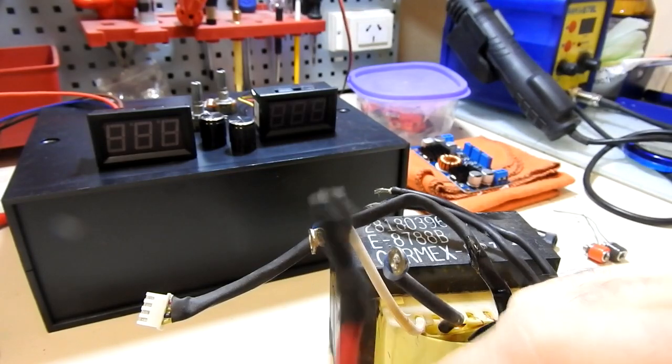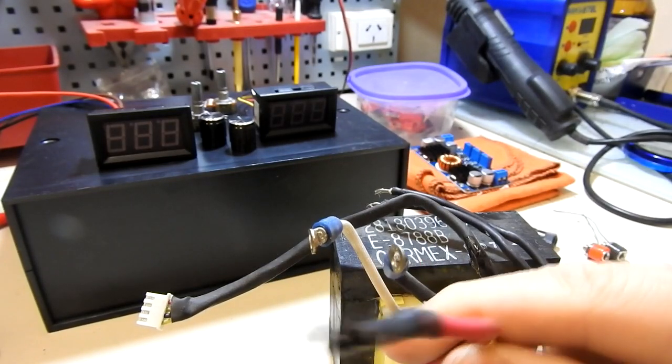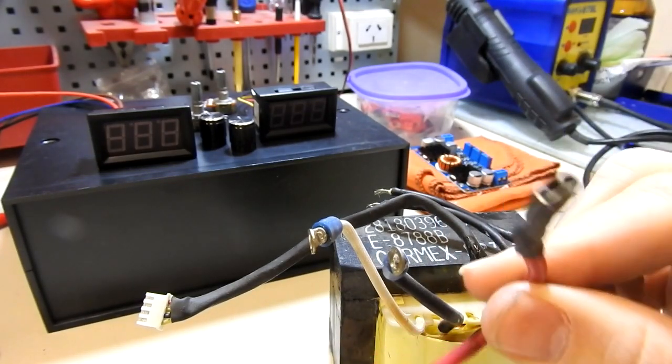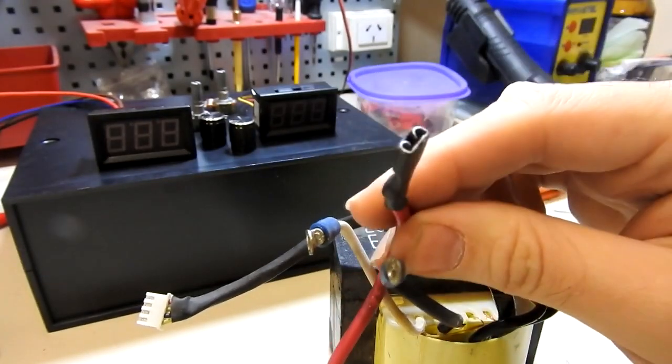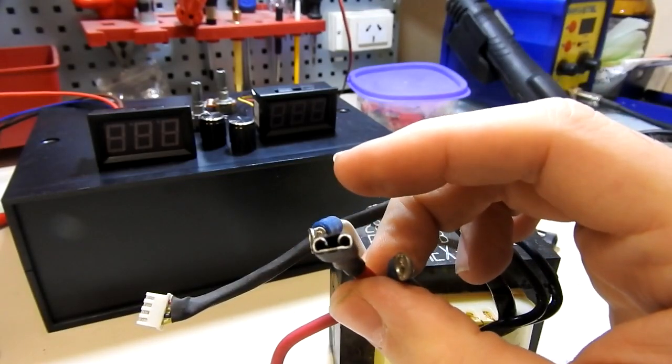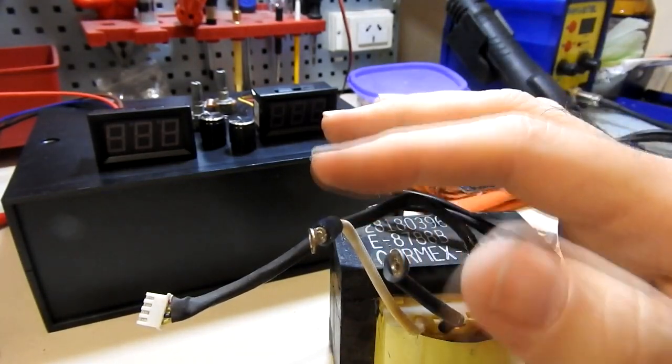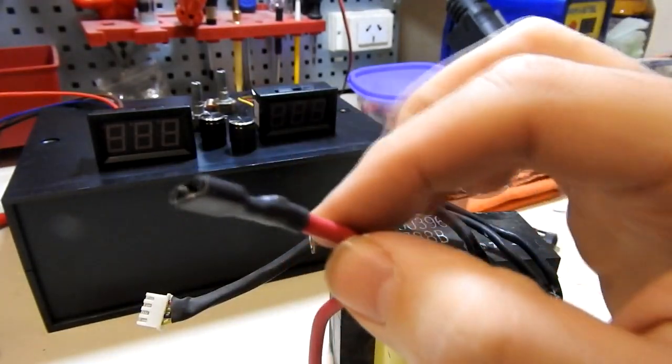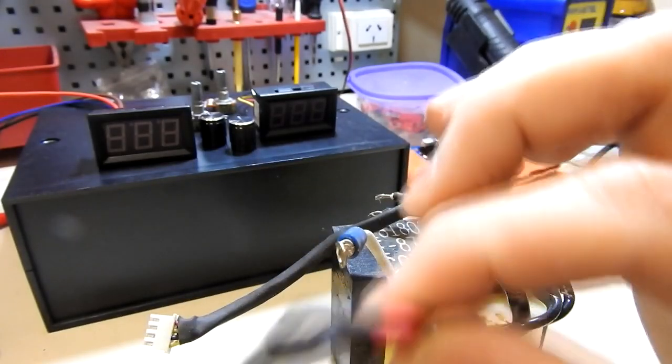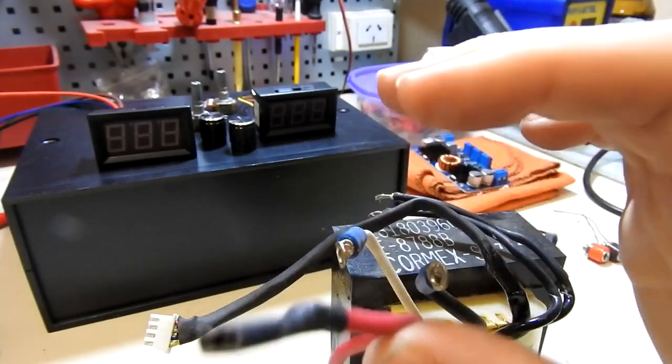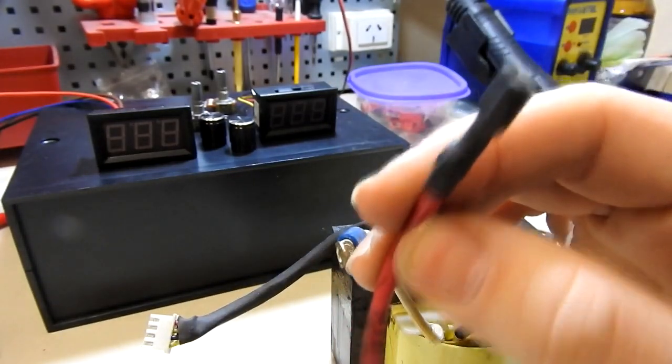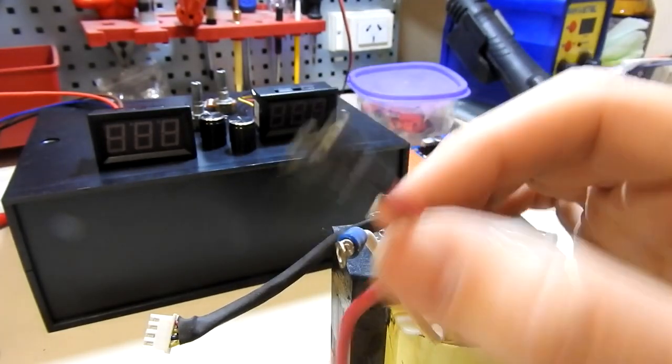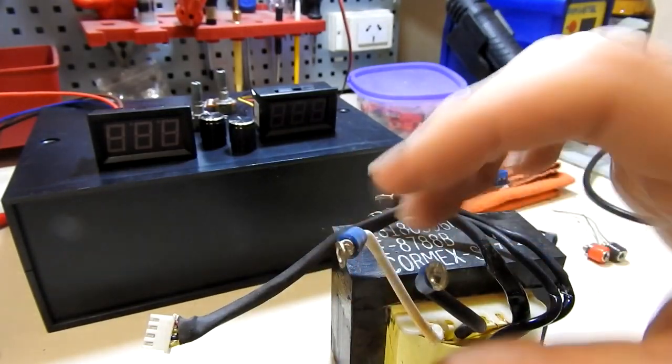También este trafo tiene una particularidad de tener un cable adicional, probablemente para algo de la UPS. Este cable está en el medio del bobinado de este transformador. En esta salida que nosotros obtenemos 14 volt de alterna, con este cable del medio podemos obtener menos 7 o más 7, que rectificados serán a menos 9 o más 9, o 10 volt por ahí. Lo que nos puede ser útil para obtener otra salida con menor voltaje.